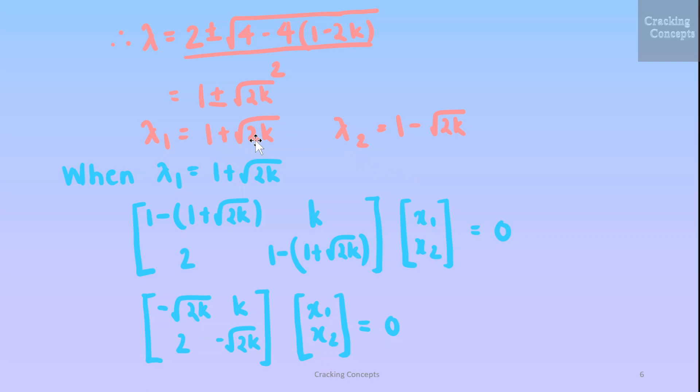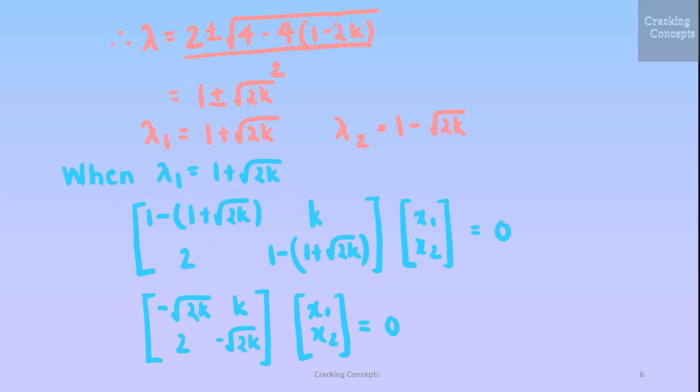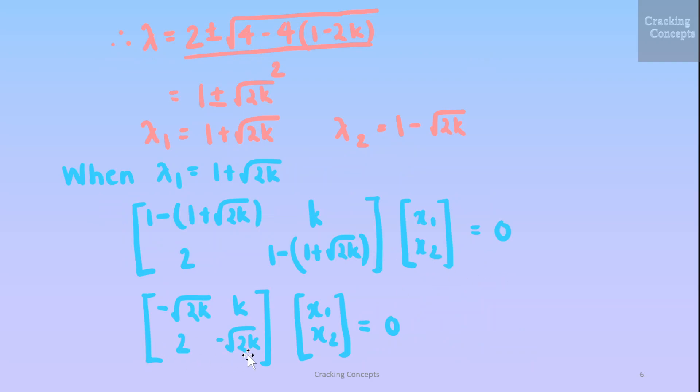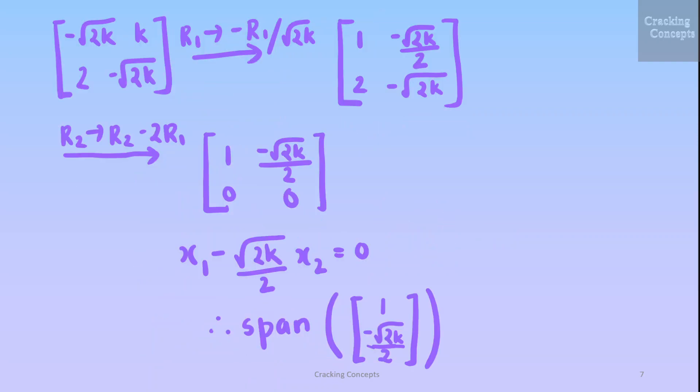Then we'll take the first eigenvalue and find out the corresponding eigenvector. So when lambda 1 as 1 plus root 2K we'll substitute this value of lambda in this expression and we'll get something like this. Then we'll take out this matrix and perform row transformation to convert it into row echelon form. For this first we multiply the first row by minus 1 by root 2K. We'll get it in this form. Then we'll subtract the second row from twice the first row. We'll get this. So this is the simplified form.